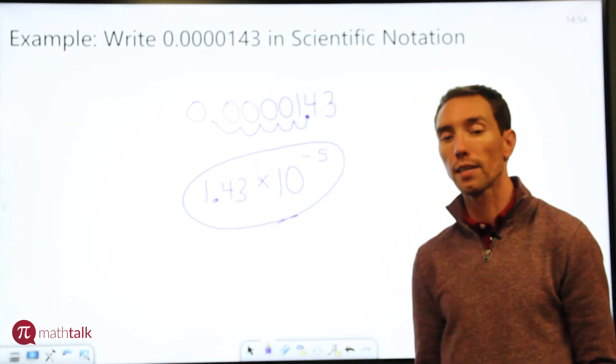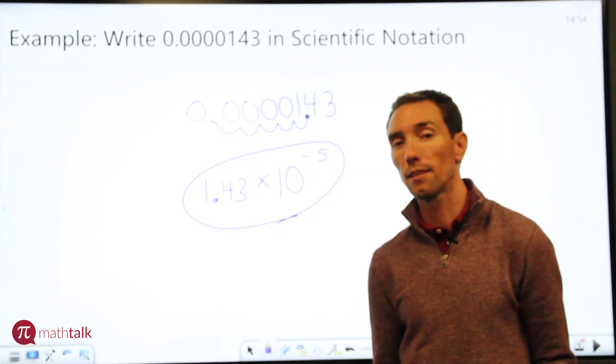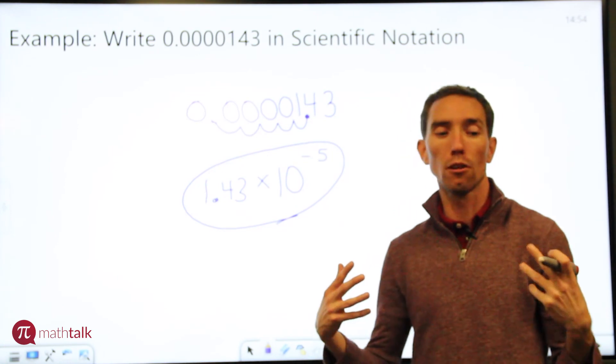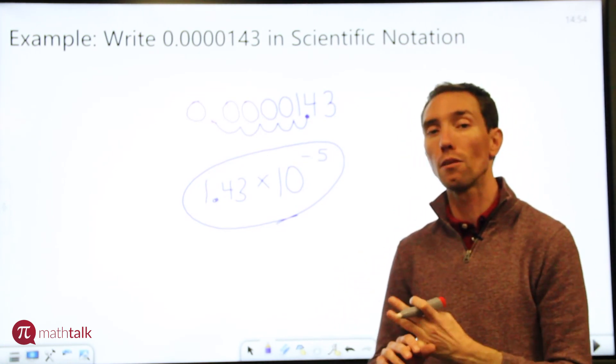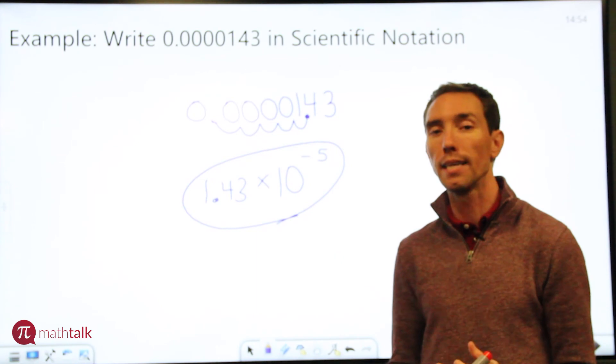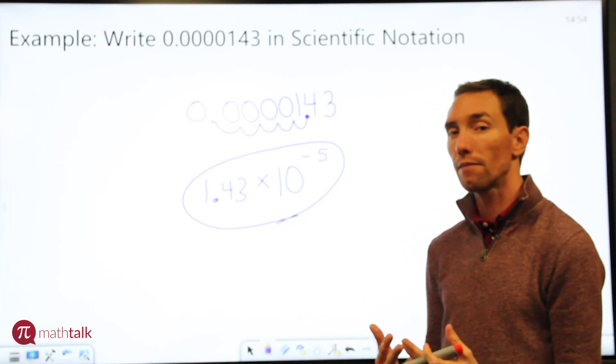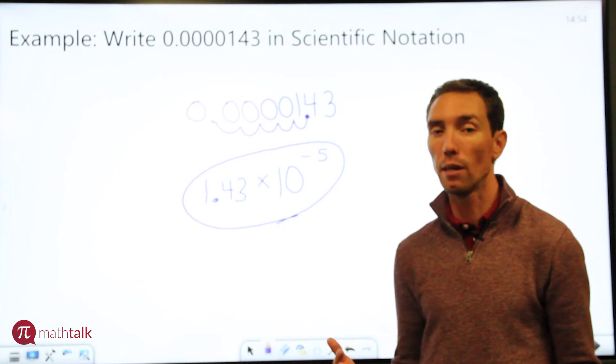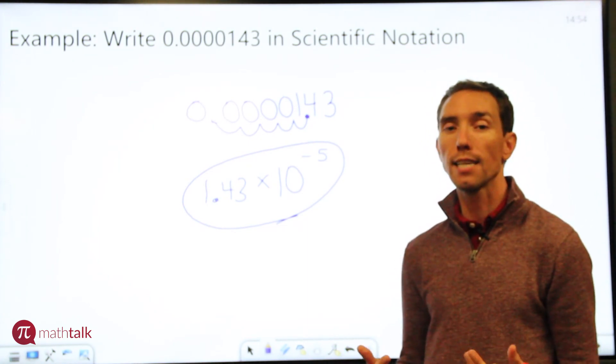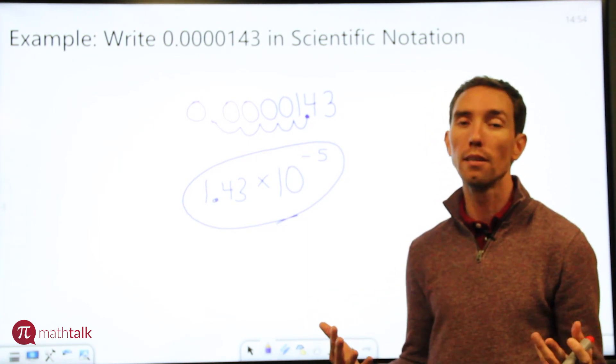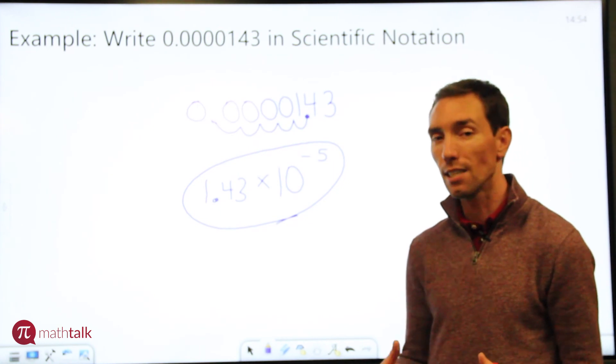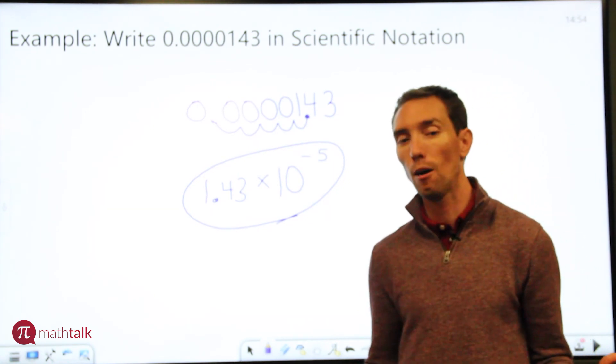So I hope this helps you out as you look at representing numbers in scientific notation. You want to look to see what's your first non-zero number. You want to figure out how many spots do I need to move my decimal point. And remember, your number in front of the times 10 has to be between 1 and 10. And then your exponent, if it's a really large number, it's a positive exponent. If it's a really small number, it's a negative exponent. So I hope that helps.